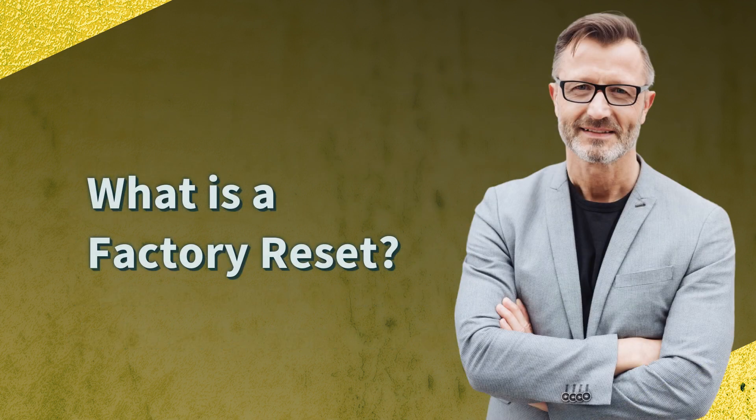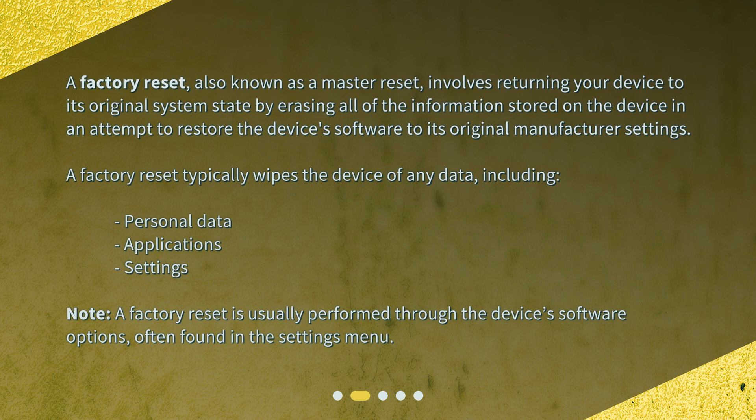What is a factory reset? A factory reset, also known as a master reset, involves returning your device to its original system state by erasing all of the information stored on the device in an attempt to restore the device's software to its original manufacturer settings. A factory reset typically wipes the device of any data, including personal data, applications, and settings. It is usually performed through the device's software options, often found in the settings menu.